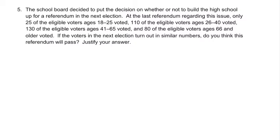What it's basically saying — you can pause and read the whole thing if you'd like — but it says at the last referendum, the last time they voted on an issue, the following things happened. 25 of the voters in this age range voted, 110 in this age group voted, 130 in this age group voted, and 80 in the oldest age group voted.